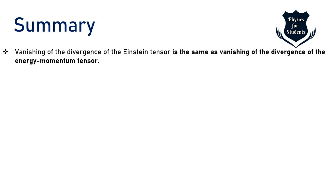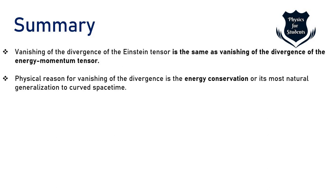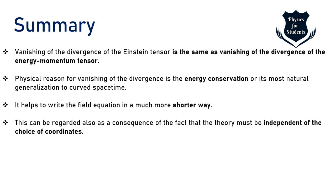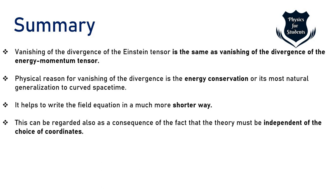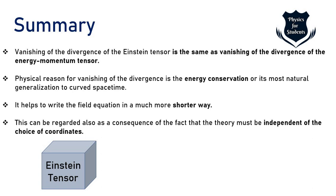To summarize: the vanishing divergence of Einstein's tensor matches the divergence of the energy-momentum tensor. The physical reason is energy conservation, most naturally expressed in curved spacetime. The long EFE can be written more compactly, which follows from the theory being independent of coordinate choice — as general relativity deals with arbitrary positions on the manifold, we need something coordinate-independent. Thus Einstein's tensor equals the stress-energy momentum tensor.